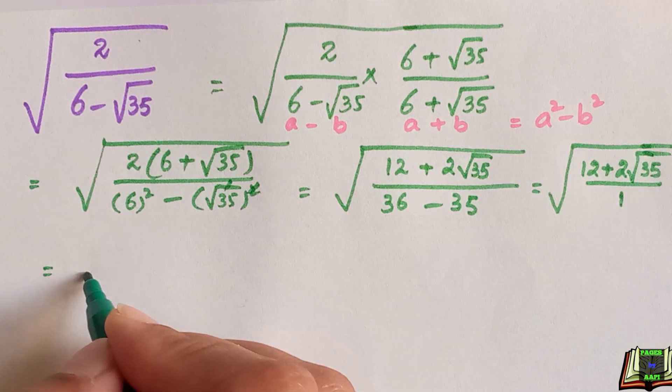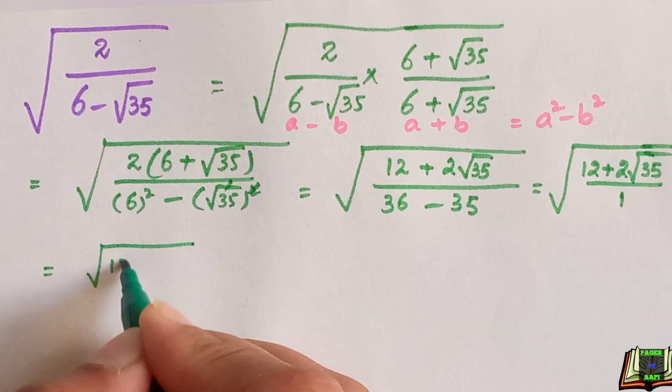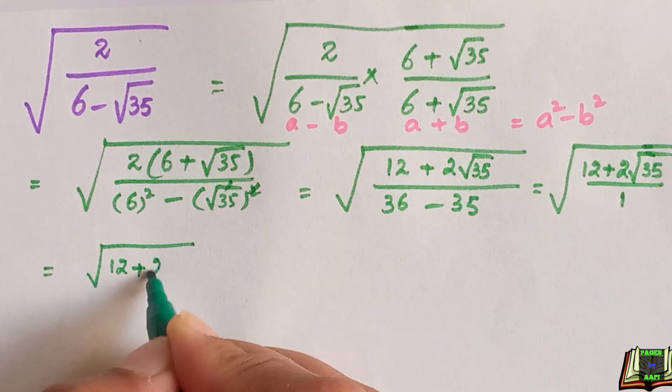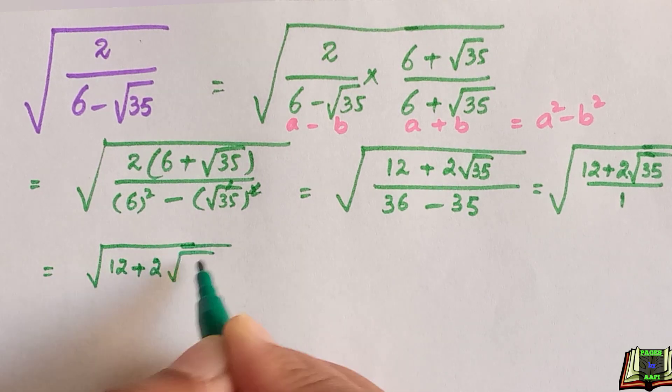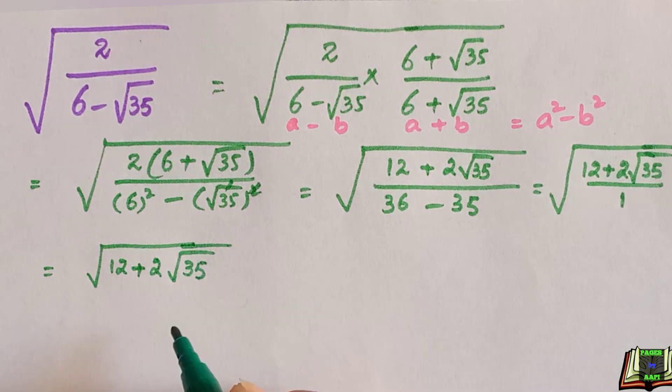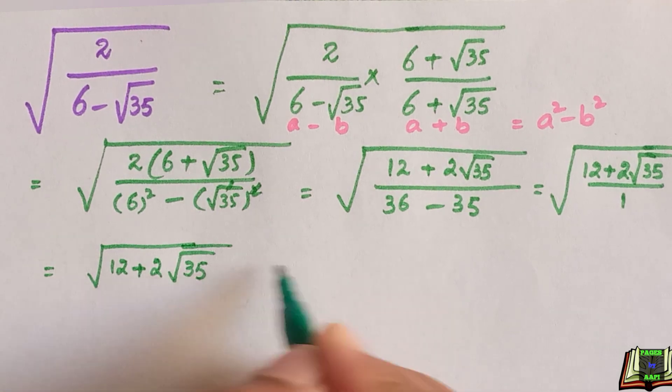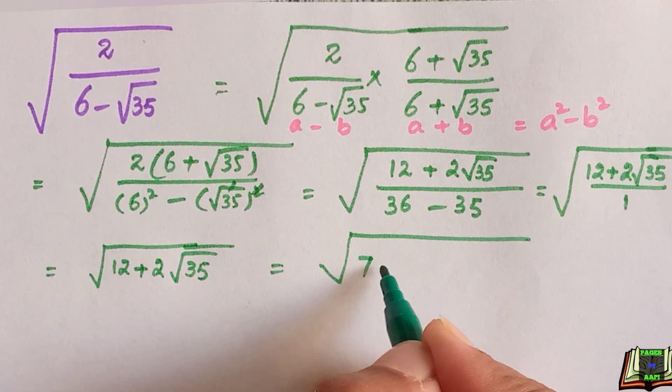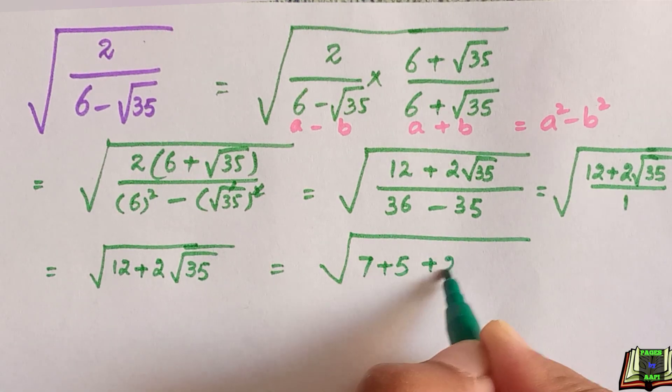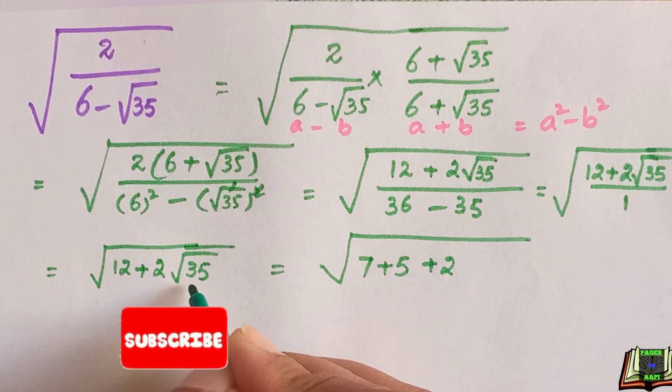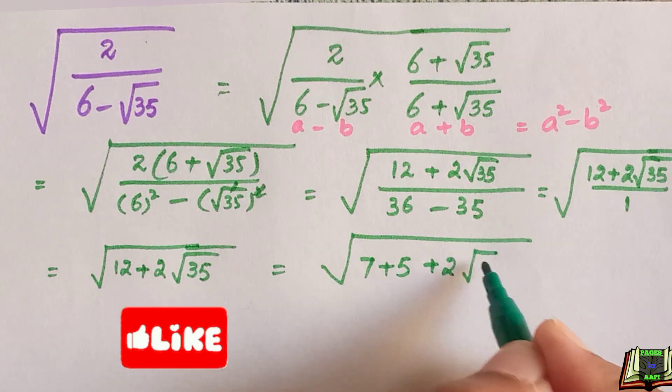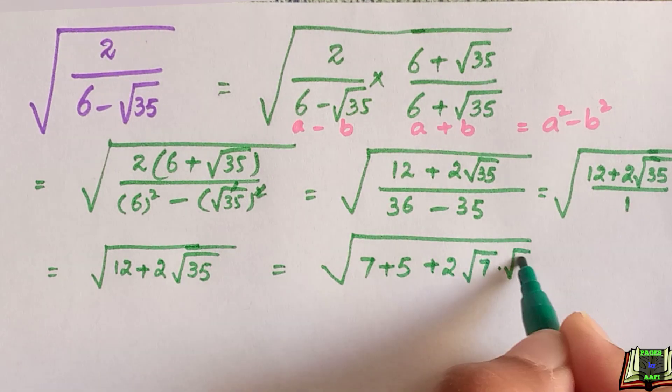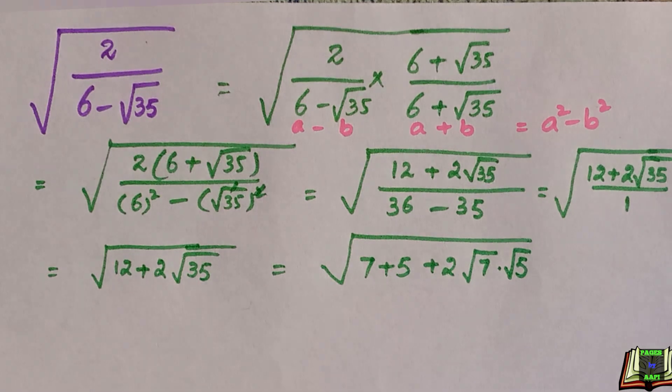And divided by 1 again, it's equal to root 12 plus 2 root 35. We can write 12 as 7 plus 5 plus 2 root. We can write this 35 as root 7 times root 5 because 7 times 5 is 35.